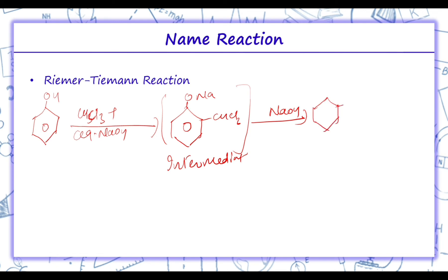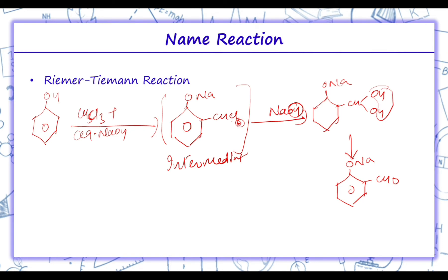In the next step, Cl is replaced with OH, giving ONACHO, which on hydrolysis in acidic medium gives salicylaldehyde. Here we used chloroform, so we get salicylaldehyde. But if we had used carbon tetrachloride instead, the product formed would be salicylic acid.